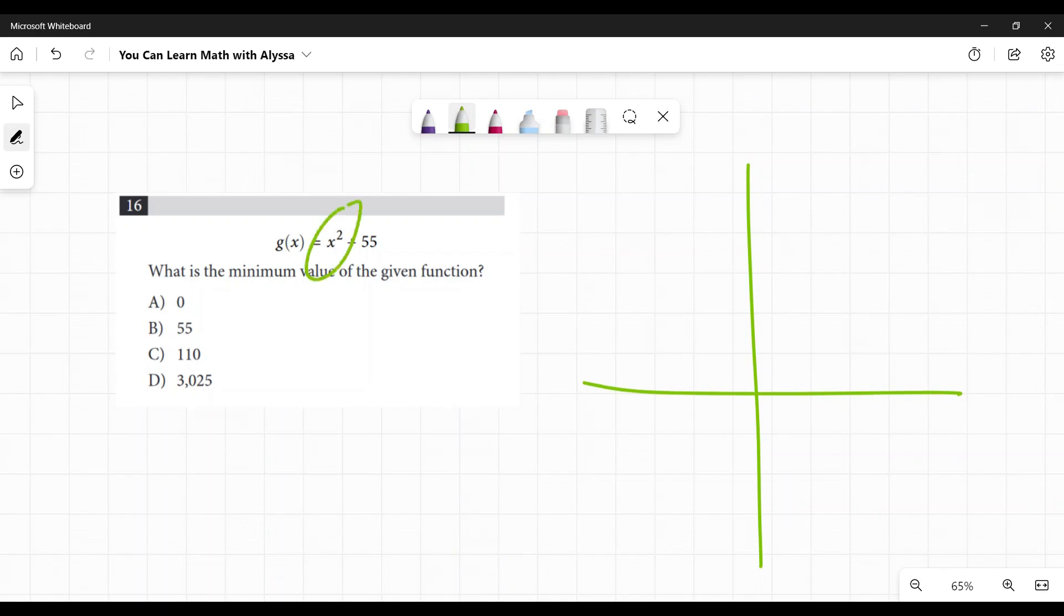So x squared, that is just a plain old parabola. And I'm not going to worry about the 55 for a second. If I was graphing x squared, it would look something like this. Forgive my sloppiness. It's going to be a parabola with a vertex at 0, 0. The minimum value there would be 0. The y is 0 at that point.